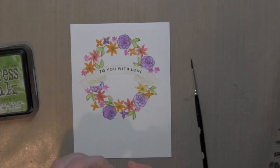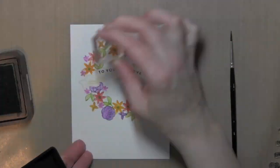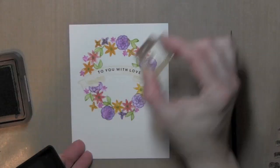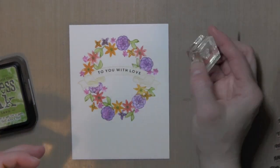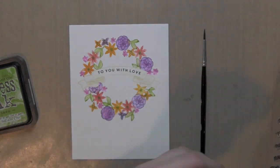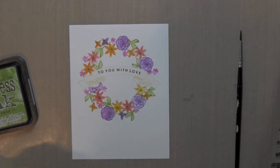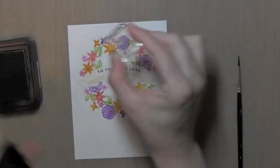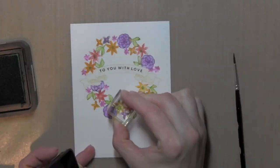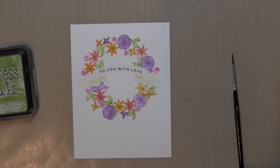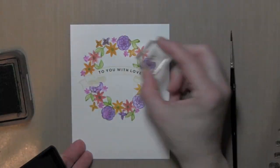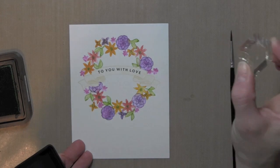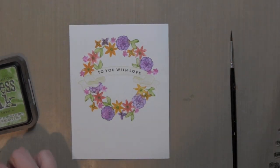And then I'm taking one of the teeny tiny coordinating stamps that's like a center for the flowers and stamping with my Mowed Lawn Distress ink and creating some centers and some dimension for some of these flowers. You can see I added quite a bit of greenery there, quickly adding all of that, just here and there to really fill it in and make it nice and full.